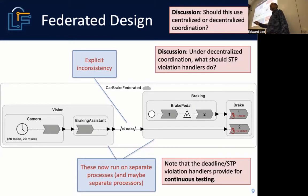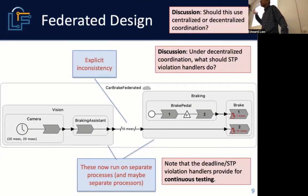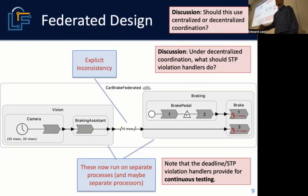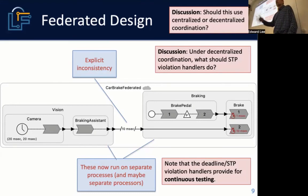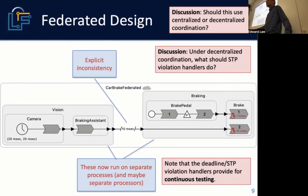The ADAS system ideally doesn't do real emergency work very often — ideally you drive the car for its entire lifetime and it never does an emergency stop having detected a pedestrian. So you put a system into the car that you hope never has to do its job, but you want to be sure it's always working. This framework gives you a very nice continuous testing mechanism — the system is being tested all the time.